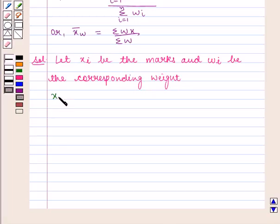Then the value of x1 is given by 70, x2 is 60, x3 is equal to 90, x4 is equal to 50 and x5 is equal to 45.